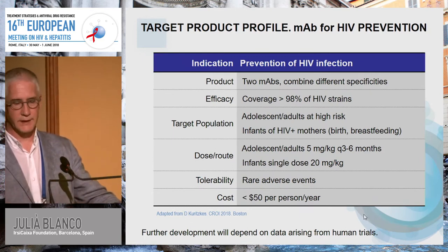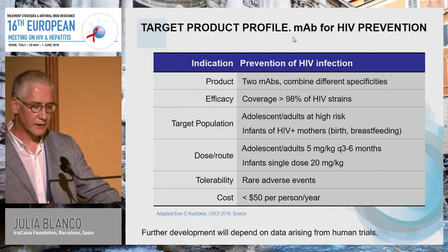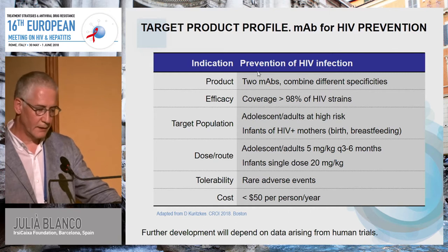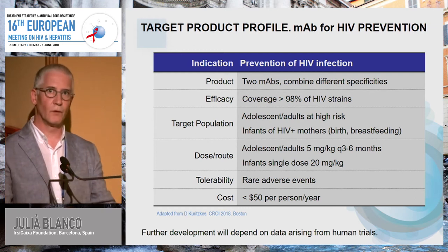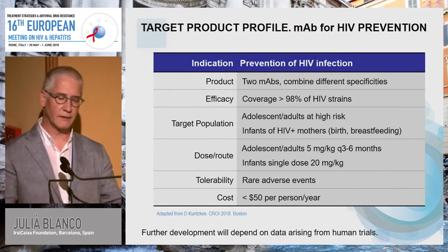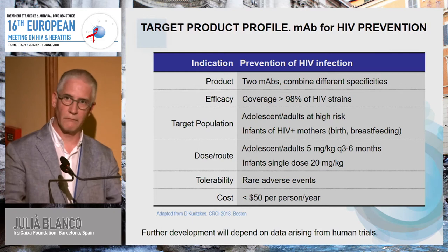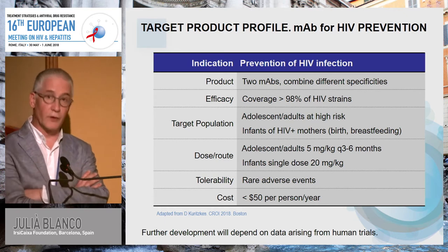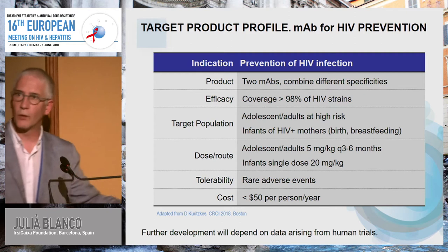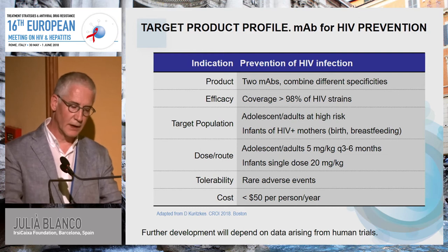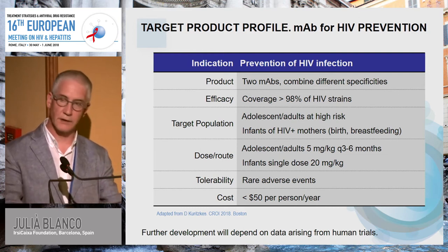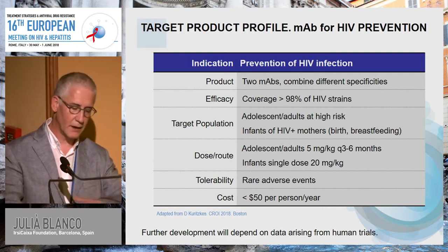While we wait for that data, the NIAID has defined a target product profile for antibodies in HIV prevention, presented by Dan Kuritzkes at CROI. The requirements include probably more than one antibody with different specificities to cover more than 98% of HIV strains across different subtypes.